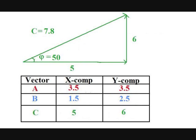And we have done it. We have added together two known vectors, A and B, and produced a new vector C, identified with its own magnitude and direction: magnitude 7.8, and 50 degrees above the horizontal.